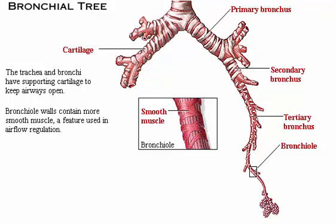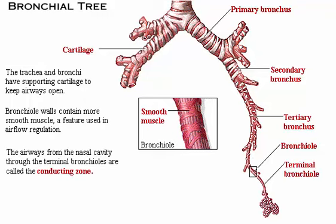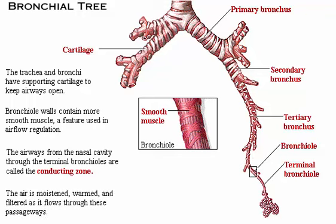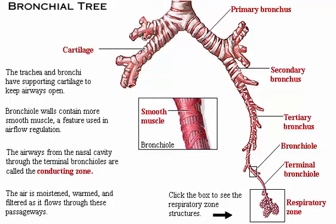Bronchioles branch further into terminal bronchioles. The airways from the nasal cavity through the terminal bronchioles are called the conducting zone. The air is moistened, warmed, and filtered as it flows through these passageways. Beyond the terminal bronchioles, the air enters the respiratory zone — the region of the lung where gas exchange occurs.